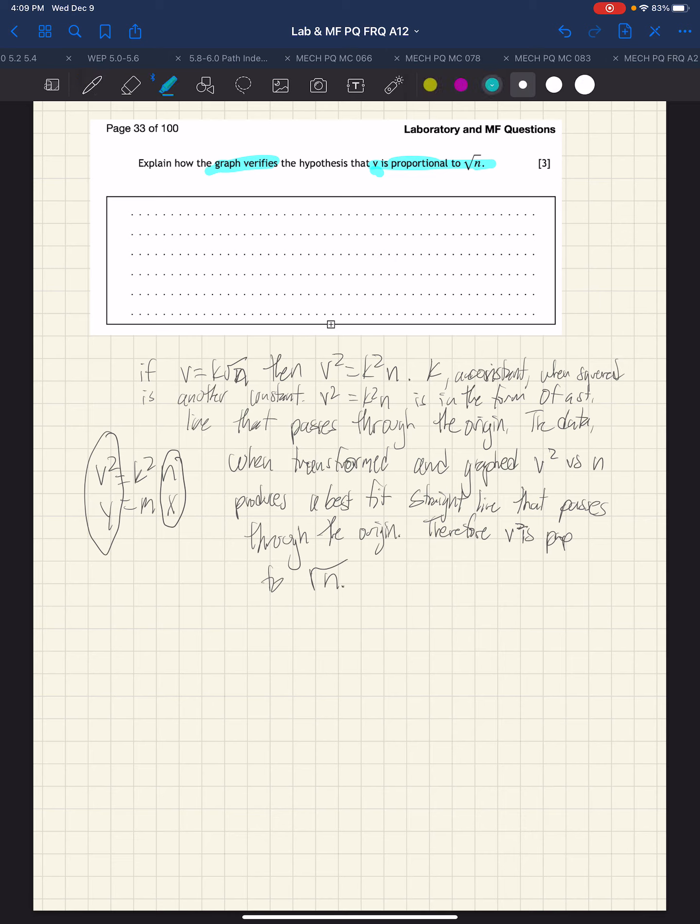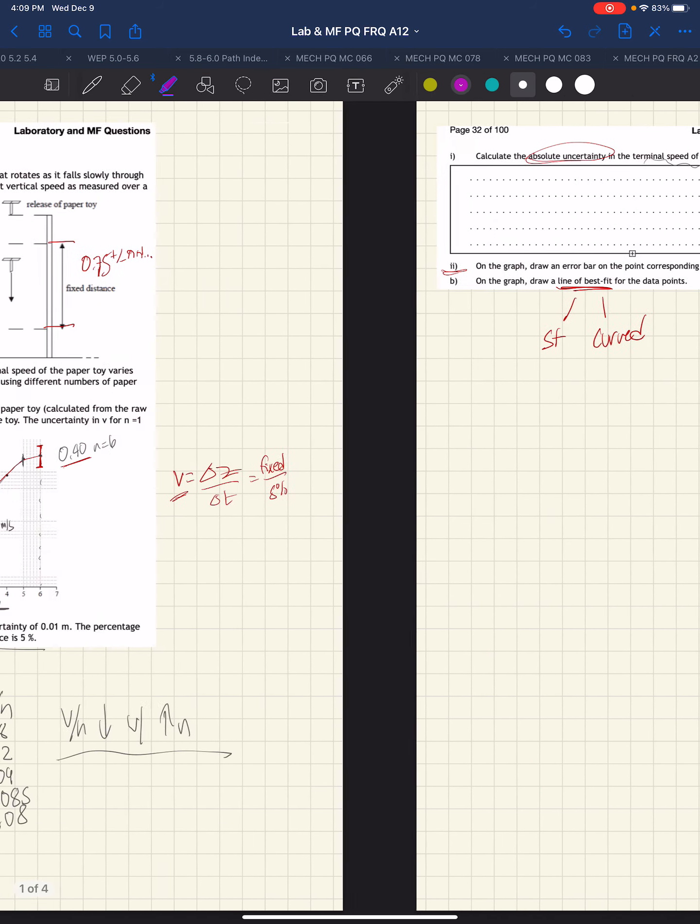If we trace out our logic here, we've got our premises, our basic physics, our argument about what we'd expect to see. And that is in the form of a straight line that passes through the origin. Then we've got our observation: the data, when transformed to graph v squared versus n, produces a best-fit straight line that passes through the origin. Therefore, v is proportional to the square root of n. It's very important to note that we're asked to use the graph to verify this hypothesis.